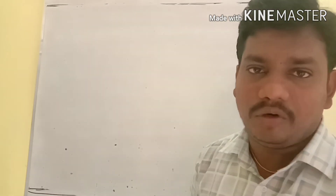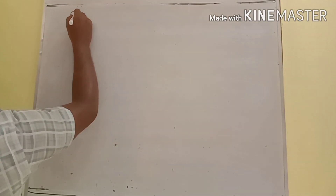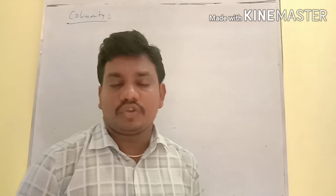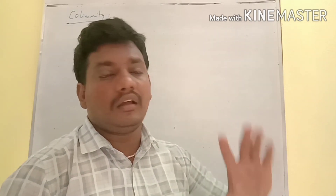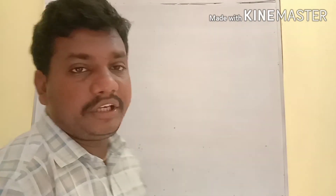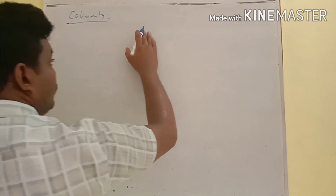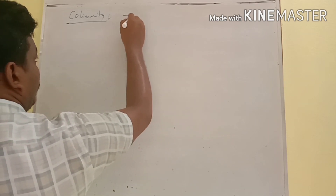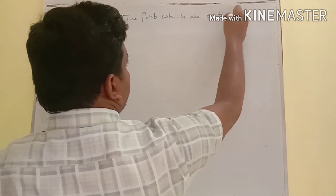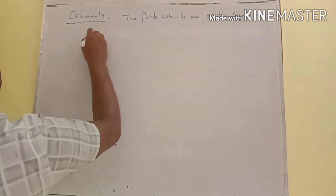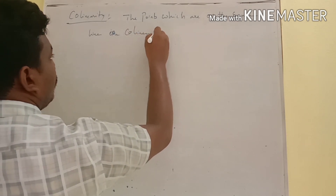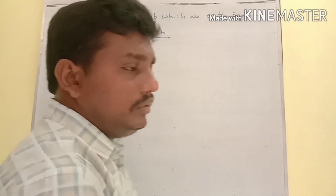In this video we are going to discuss collinearity. Two points are always collinear. If we consider three or more points on the same line, those points are called collinear points — points which lie on the same line are collinear points.